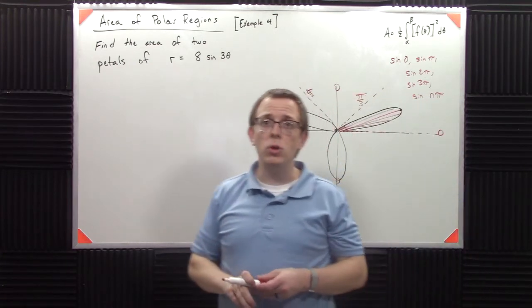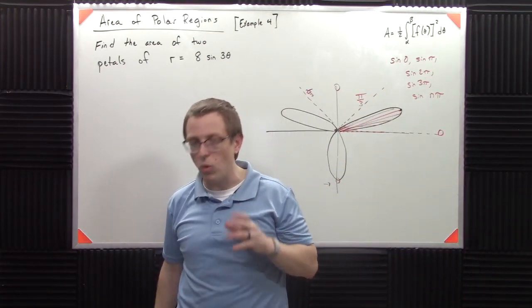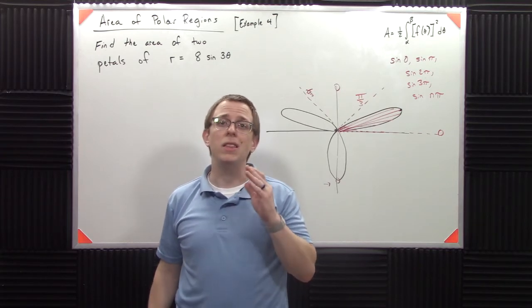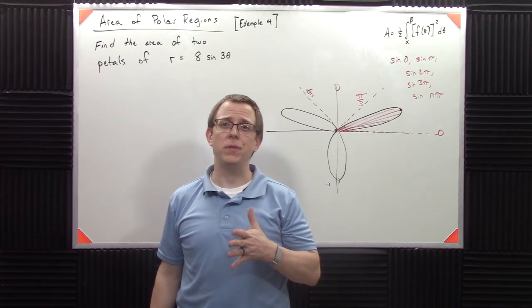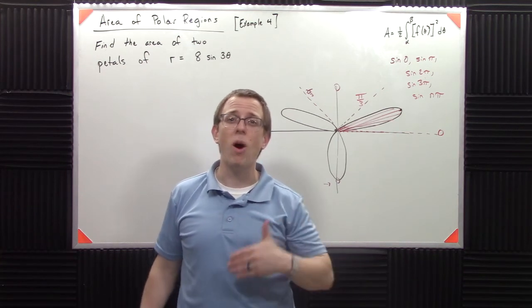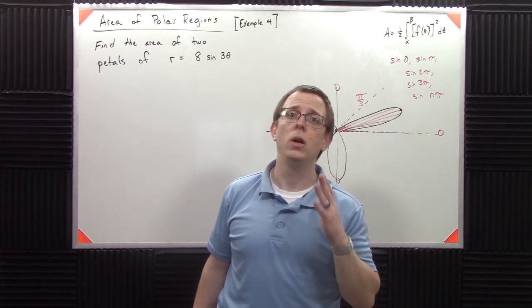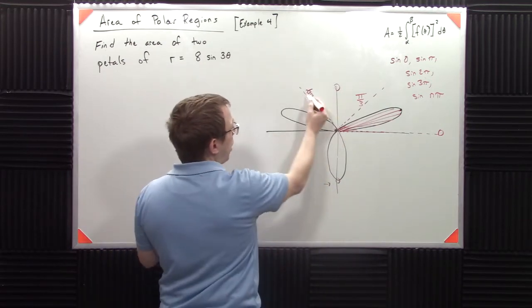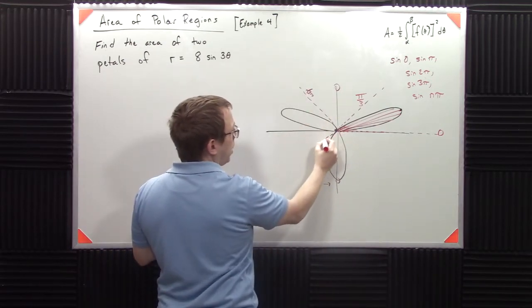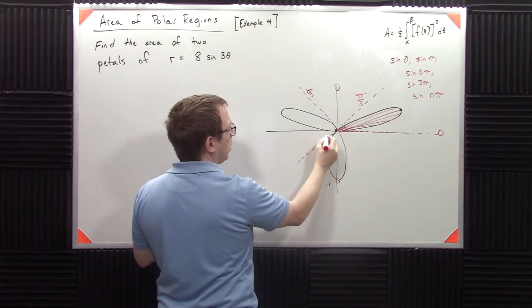So what we're going to have to do is we're going to have to set this up as, there's either two ways to do it. One is it's two separate integrals. The other is to realize that the area of two petals is twice the area of a single petal. We'll get there in a minute.